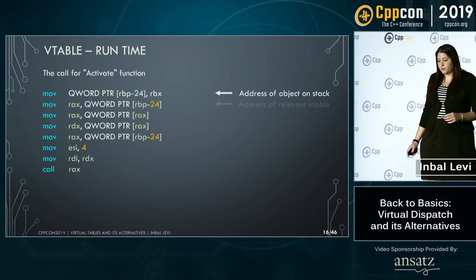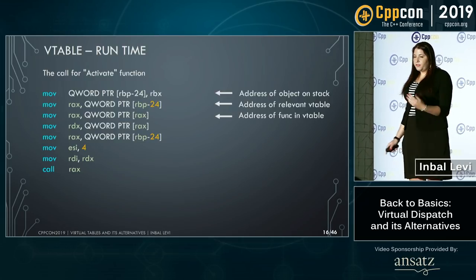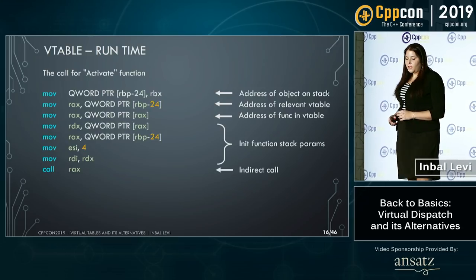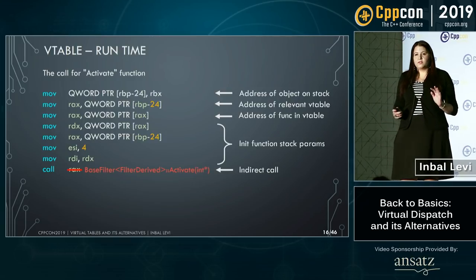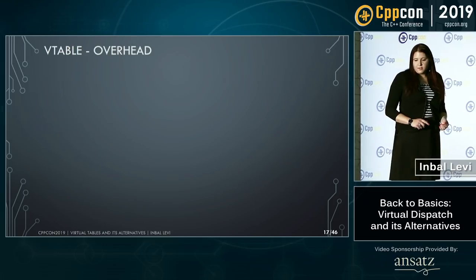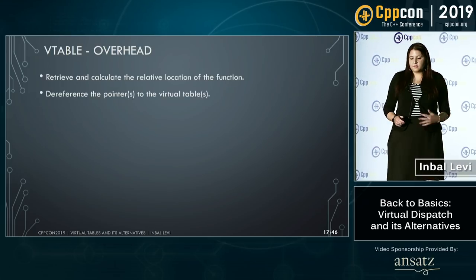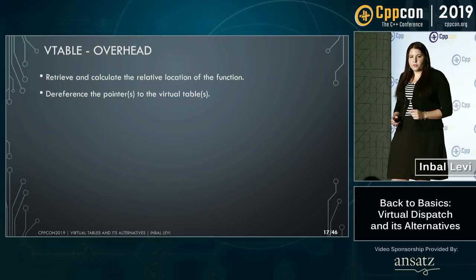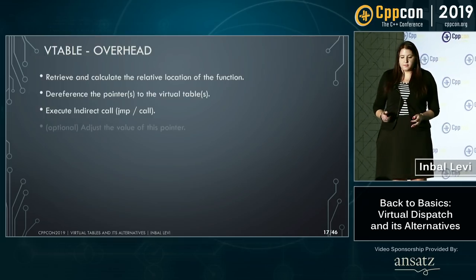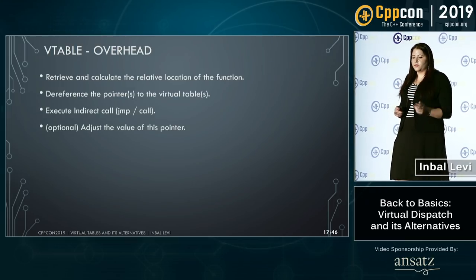In assembly, the first line is the address of the object on the stack. Then we have the address of the relevant virtual table. We dereference that to get the address of the function in the virtual table. Then we pass all the params on the stack for the function call, and then we have our indirect call. If we were not using this mechanism, we would just have a direct call through the pointer — that's what we're trying to achieve.